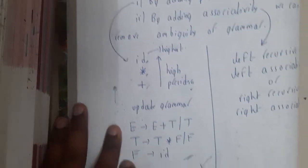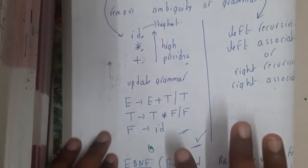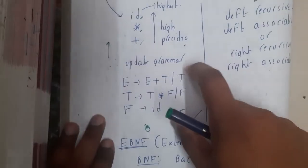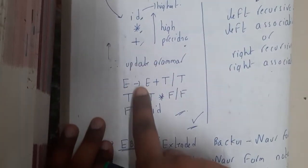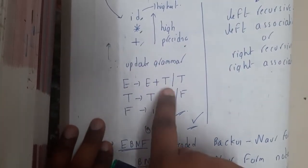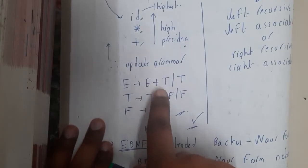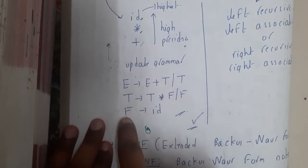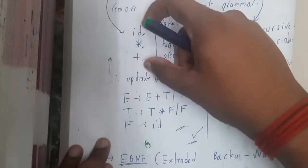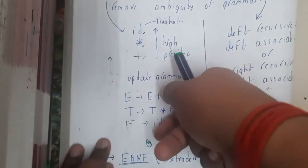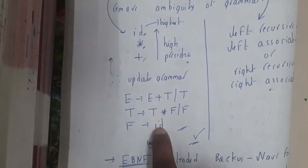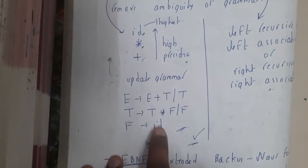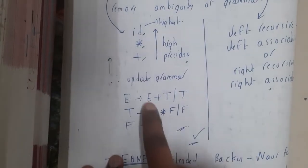So that is the reason why removing this ambiguity using the precedence we will be converting the grammar in this way: E→E+T, T→T×F, F→id. So if you notice here, I just reversed these things—plus, into, id. In this way, if you design, indirectly the precedence of id is high, after that multiplication, after that positive.